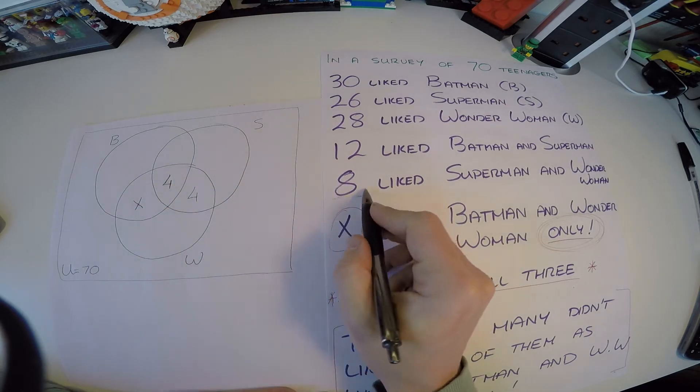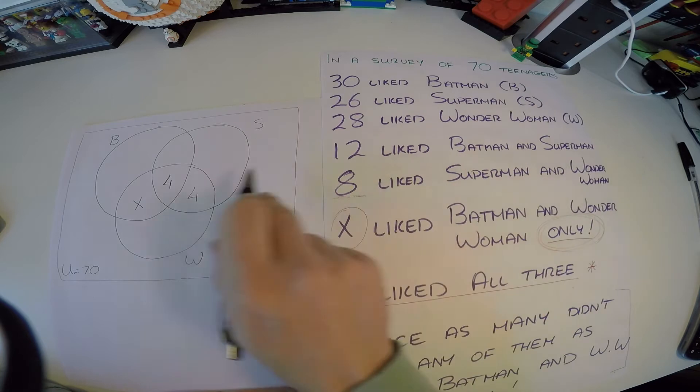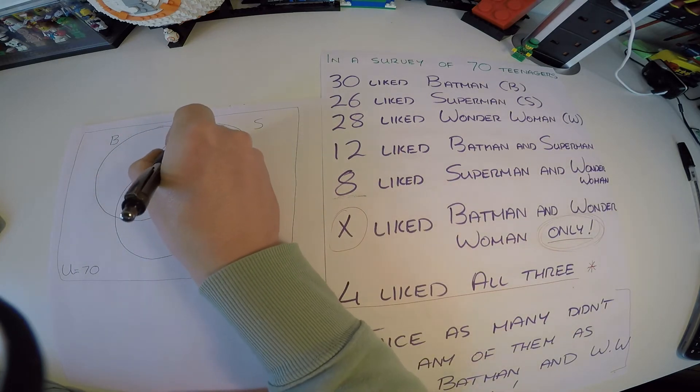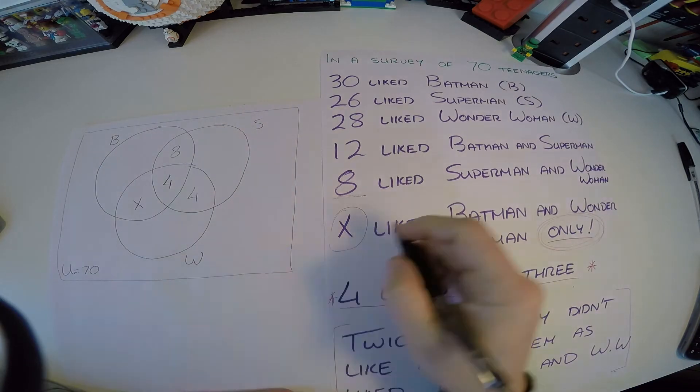12 like Batman and Superman, which is all this section here, that makes up 12. And we already have a 4, so this must be 8 in here. So we're kind of ticked off as we go along what we have.